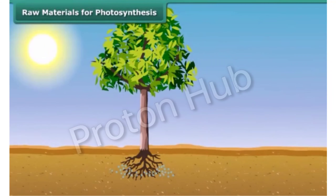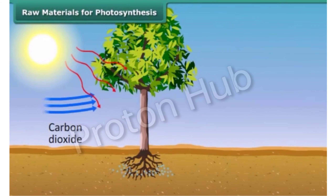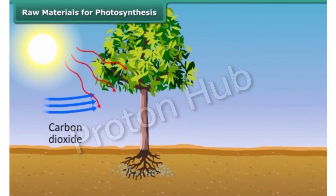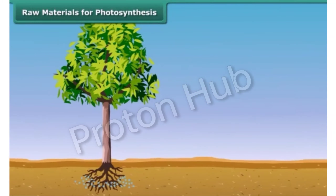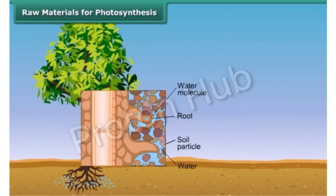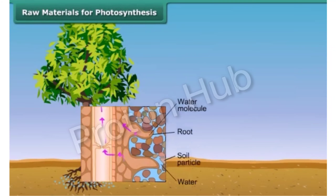Now you know that in plants, water, minerals, and carbon dioxide are raw materials for the synthesis of food. Water and dissolved minerals are absorbed directly from the soil through roots and sent to the leaves by means of many small vessels present in the stem.